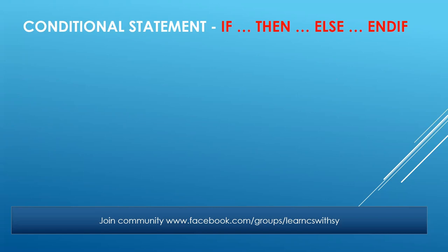Before we proceed to the case statement, let's very quickly recap 'if then else end if.' Here is a simple example: you have taken input in a variable called age, and you check — if age is less than 18, then output 'child'; else output 'adult'; end if. It's a very simple example just to recap how 'if' is written. Any questions, any ambiguity?